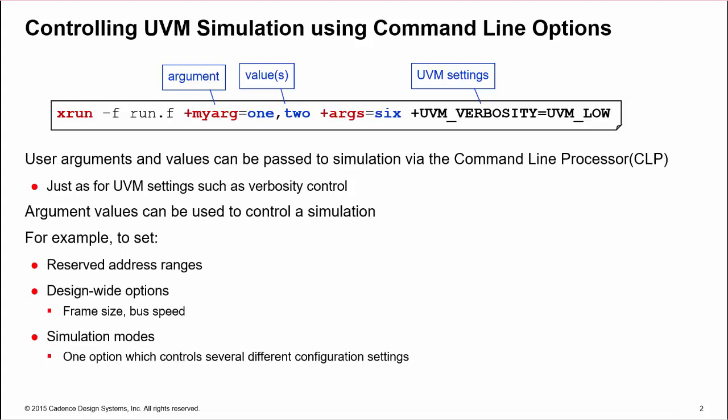We can then use these values to control a simulation, such as defining reserved address ranges, setting design-wide options such as frame sizes or bus speed, or setting simulation modes where a single command line argument can be used to control multiple UVM configuration settings. These options make simulation more flexible by allowing us to use one UVM test for multiple verification scenarios.